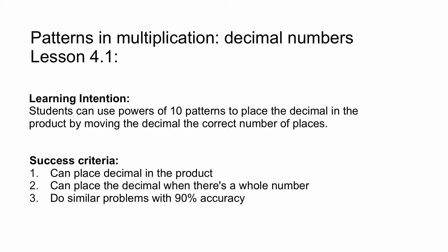This is a lesson on patterns in multiplication using decimal numbers. It goes with GoMath lesson 4.1 for 5th grade. The learning intention is that students will be able to place the decimal in the product by moving the decimal the correct number of spaces. This lesson is all about knowing how many spaces to move a decimal.